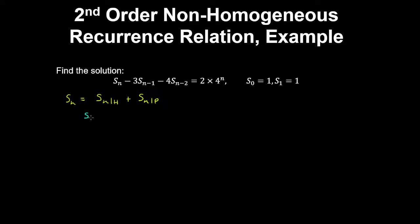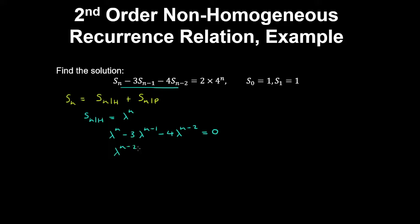For the homogeneous solution, we assume a solution of the form λⁿ. Substituting into the left-hand side, we have λⁿ minus 3·λⁿ⁻¹ minus 4·λⁿ⁻², and for the homogeneous equation that equals 0. Factoring out λⁿ⁻², we get λ² minus 3λ minus 4 equals 0, which is the characteristic equation.